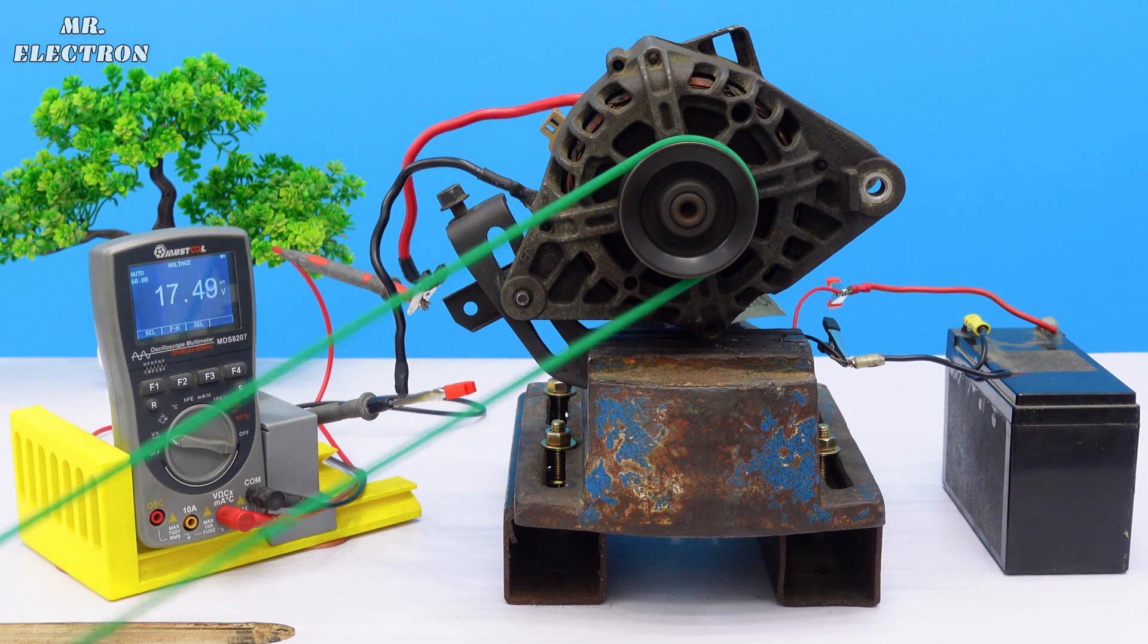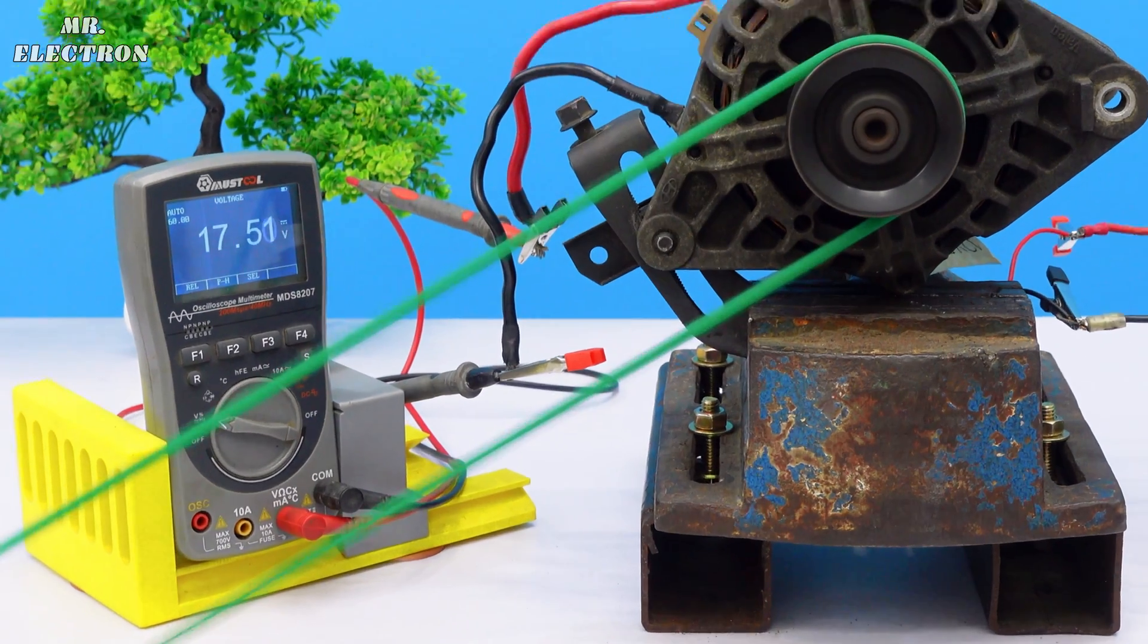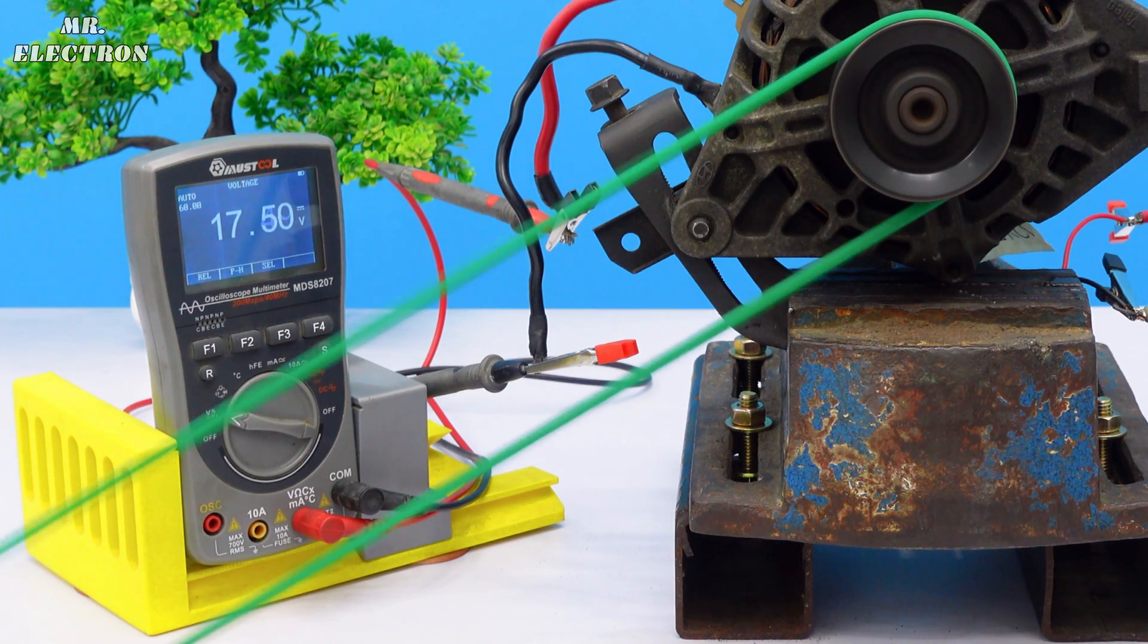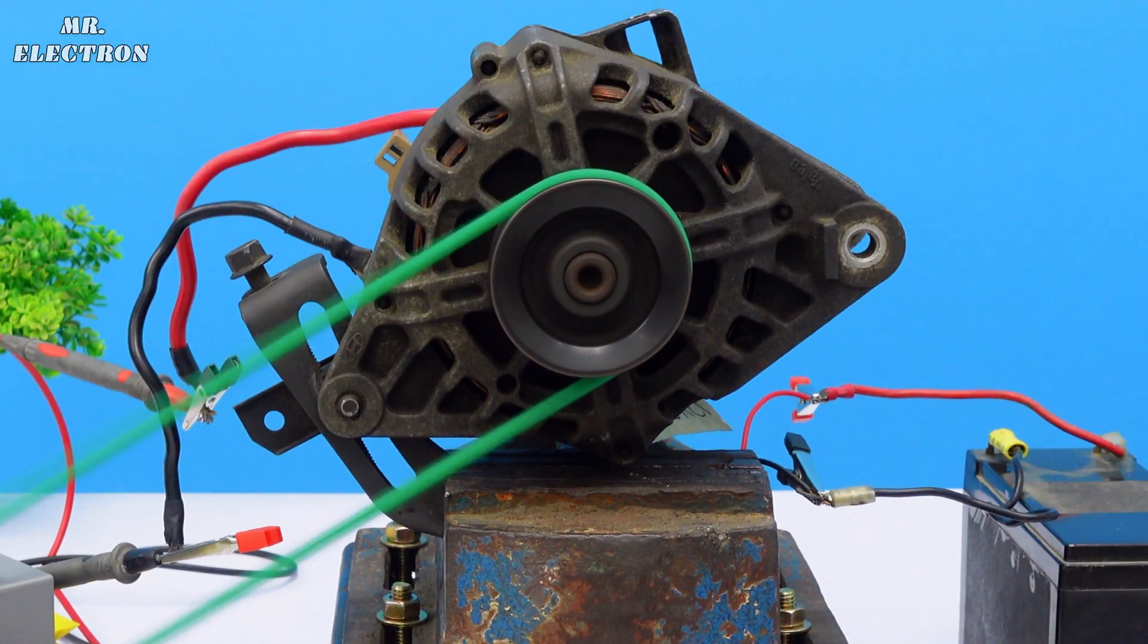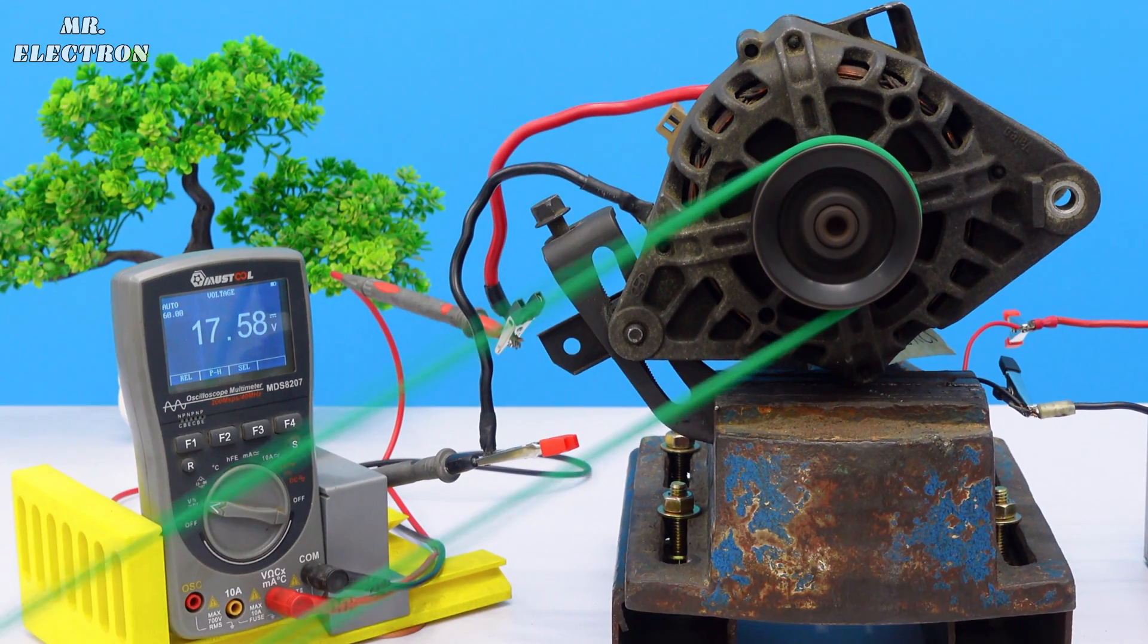Here you can see that it is already generating 17.5 volts DC, and this is the lowest RPM that I can give to my alternator. Let's increase it and see how much more we can generate.